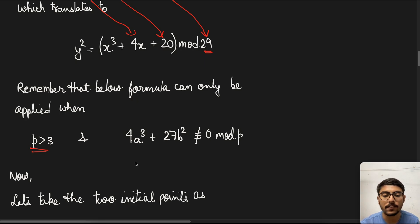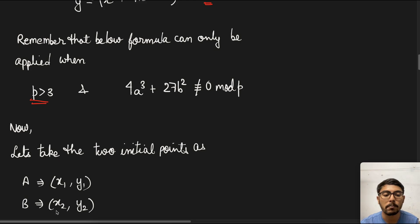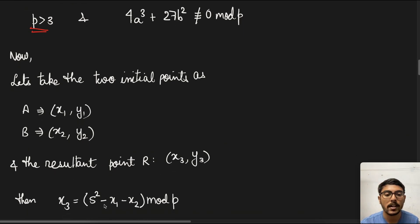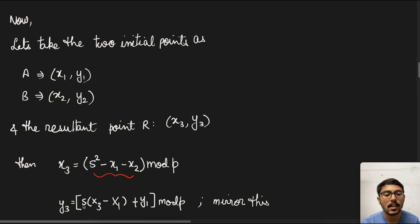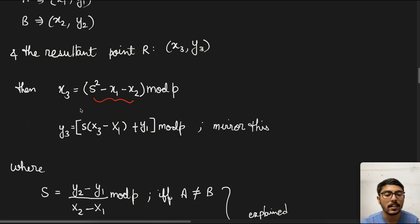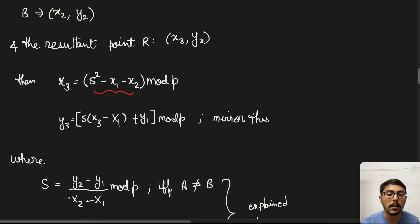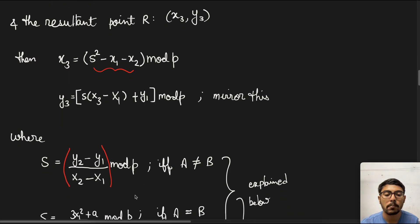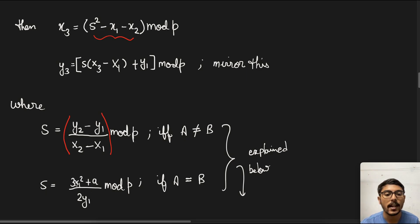We take two initial points A = (x1, y1) and B = (x2, y2), and the resultant point R = (x3, y3). Then x3 = s² − x1 − x2 mod p, and y3 = −(s(x3 − x1) + y1) mod p, where the y found is mirrored along the x-axis. The slope s = (y2 − y1)/(x2 − x1) mod p if A ≠ B (point addition), or s = (3x1² + a)/(2y1) mod p if A = B (point doubling).